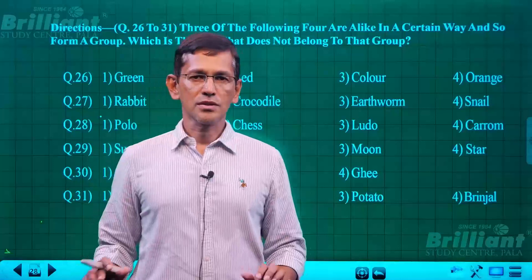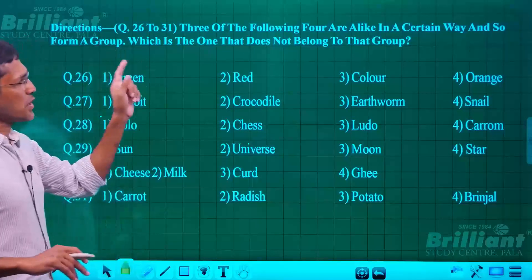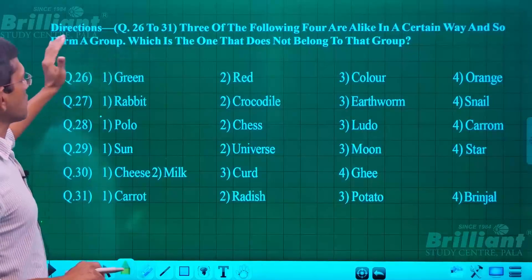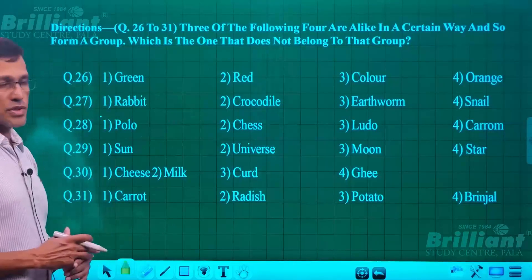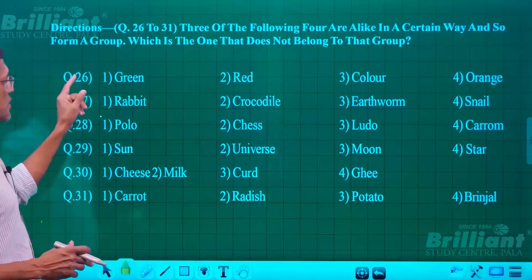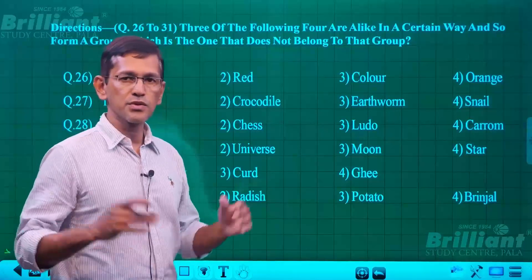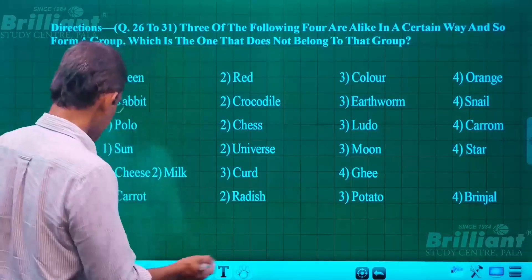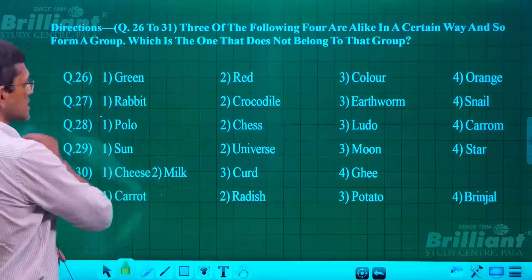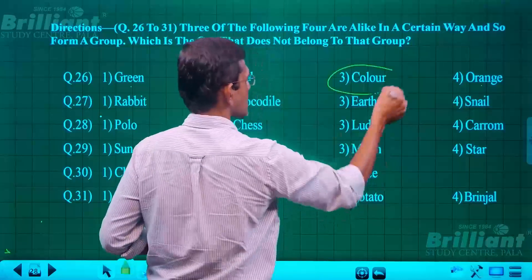Welcome back to the logical reasoning section. The question in front of us is 'Select the one which is different from the group' — also called odd one out. Question number 26: given are green, red, color, and orange. Which one is different from the group? At a glance you can see the answer — green, red, and orange are colors, but 'color' is not a color. So 'color' is the answer.